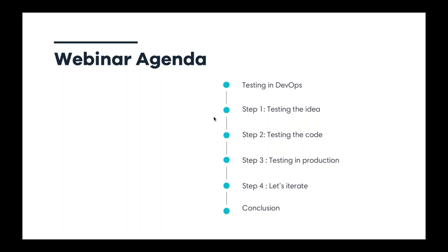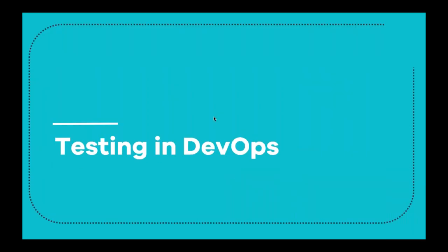Step one: testing the idea, why we should start by testing the idea. Step two: testing the code once we've done the implementation. Step three: once the feature has been deployed and is in the hands of real users, how we can continue to test in production. Step four: how we can iterate on that.